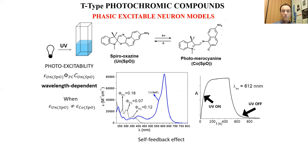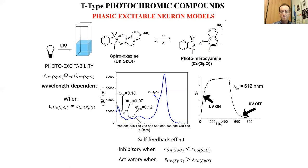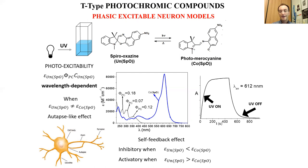Furthermore, when the uncolored form of the spiroxazine transforms to the colored form and the absorption coefficient of the colored form is different from that of the uncolored form at the excitation wavelength, we have a self-feedback effect. Such a self-feedback effect is inhibitory when the absorption coefficient of the uncolored form is less than that of the colored form, whereas it is activatory when the opposite is true. In this way we reproduce the reaction of autapses — synapses that send their signals not to other neurons but to themselves.